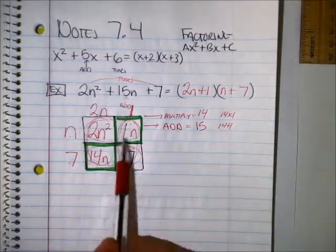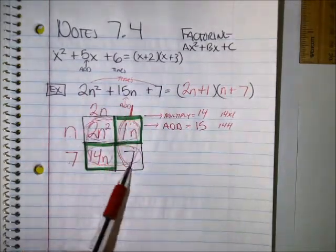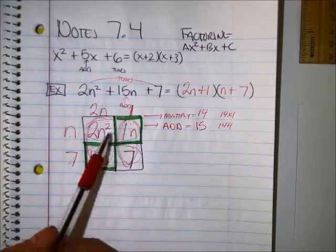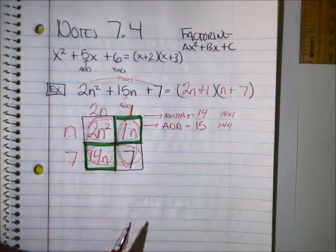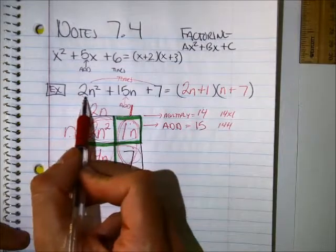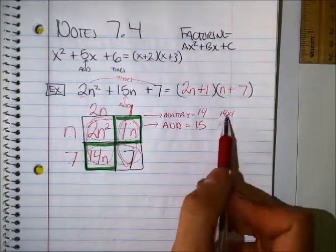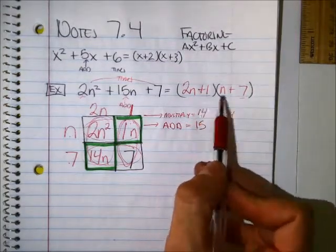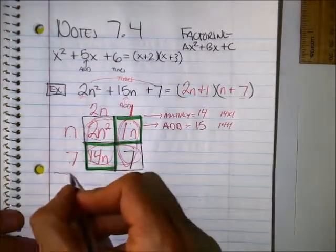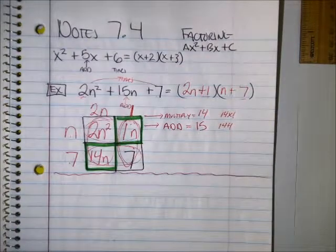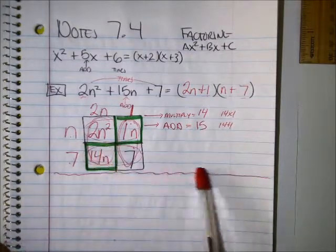The trick was, these two green boxes still add up to the middle, but they will times to make what the first and last times to make, or what these two times to make. These two boxes times to make the same thing as these two boxes. I'm just talking about the coefficients, not the actual n's. And when you notice, when there are numbers in front of the n like this, these have nothing to do with the two numbers you picked. We got 14 and 1, but look, our numbers are 1 and 7, and then there's a 2n.